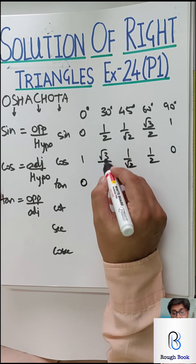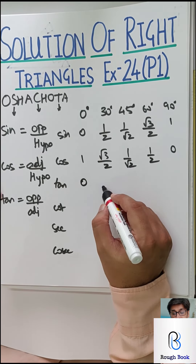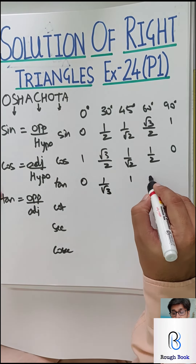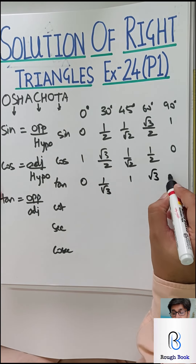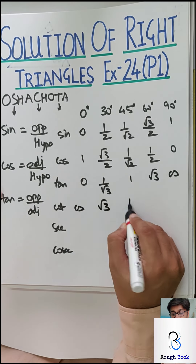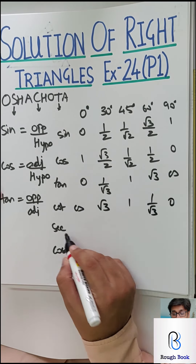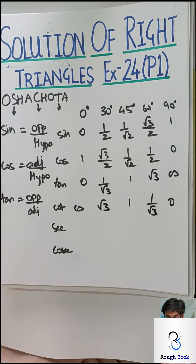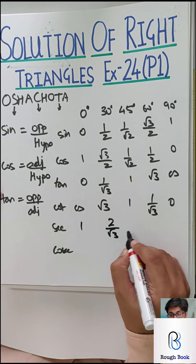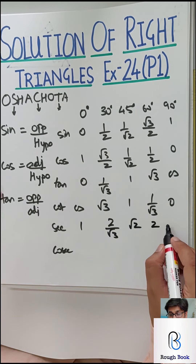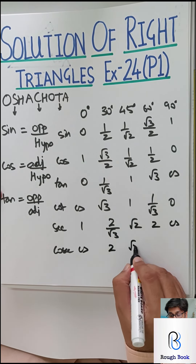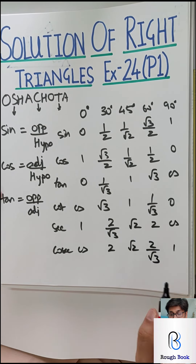Tan is dividing sine by cos. So tan gives: 0, 1 by root 3, 1, root 3, and infinite. Likewise cot: infinite, root 3, 1, 1 by root 3 and 0. Sec is the reciprocal of cos, so: 1, 2 by root 3, root 2, 2 and infinite. Cosec likewise: infinite, 2, root 2, 2 by root 3 and 1.